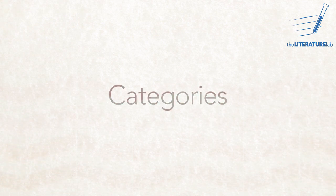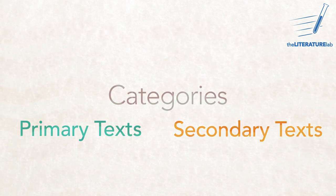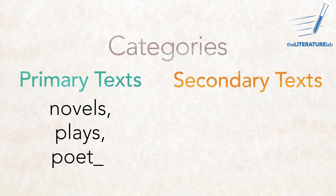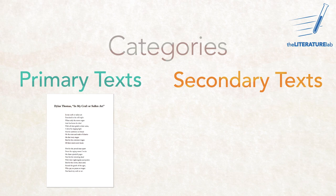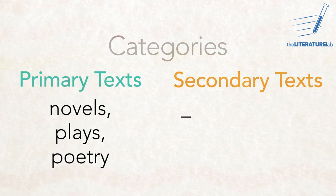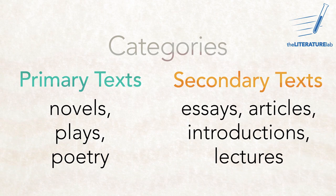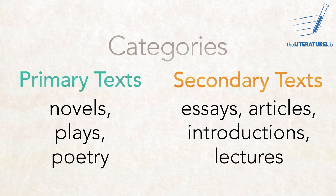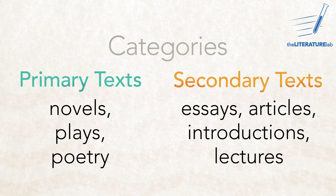In this video you'll learn how and why to quote other people's writing in your writing. But first, there are two categories of texts that most students of English literature will quote: primary texts and secondary texts. Primary texts are things like novels, plays, or poetry — like Dylan Thomas's 'In My Craft or Sullen Art,' the poem we analyzed in the last video. Secondary texts are the kinds of writing you're producing: essays, articles, introductions, lectures, summaries — any interpretive writing about a primary text. That includes Wikipedia entries, Cliffs Notes, any writing you find online or in print. When you use its ideas in any way, you need to say so.